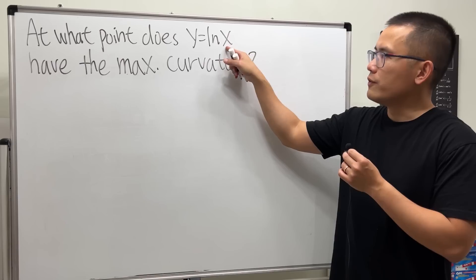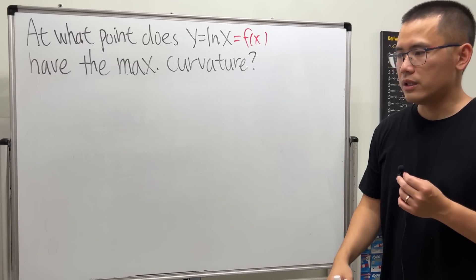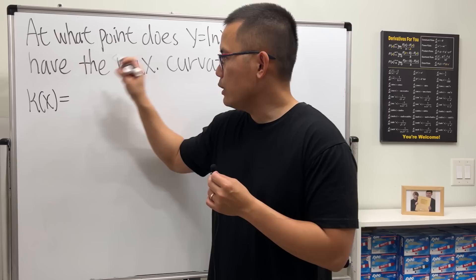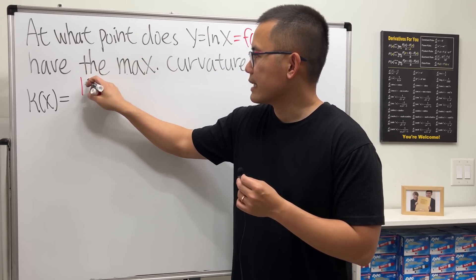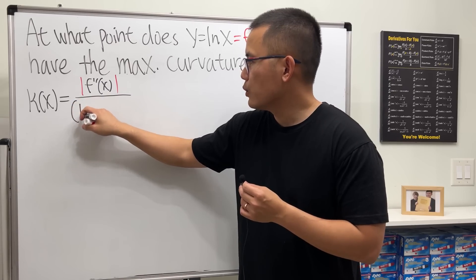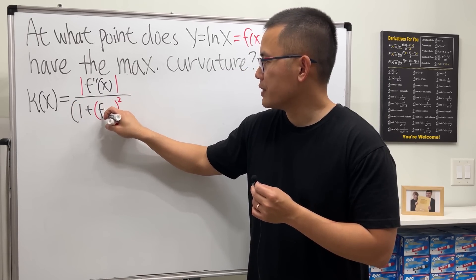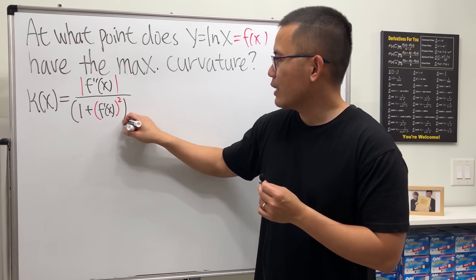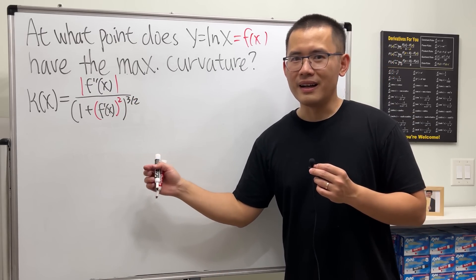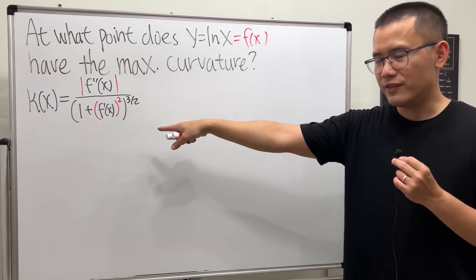Since y is equal to a function of x, we can use the following formula for the curvature: kappa(x) = the absolute value of the second derivative of our function, divided by (1 + the first derivative squared) raised to the 3/2 power. It's not an easy formula, and I did prove this previously — I'll have the link to the proof in the description.